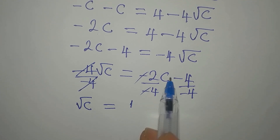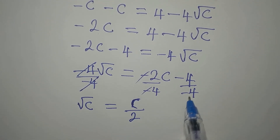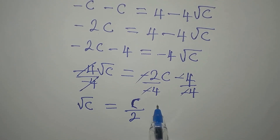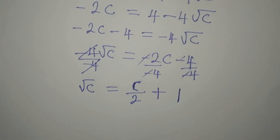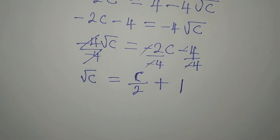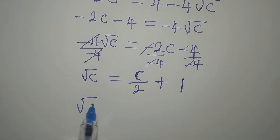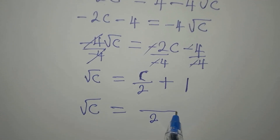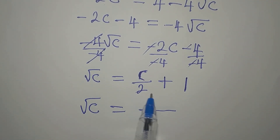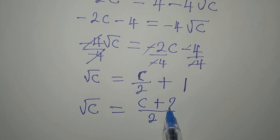We have 1c, and there is no point writing the 1, so we write c over 2. Then negative negative will turn to positive, and we have plus 1. Let me find the LCM of the right-hand side. We have root c. The LCM here is 2. 2 divided by 2 is 1 times c, that will be 1c, then plus 2 times 1 is 2.